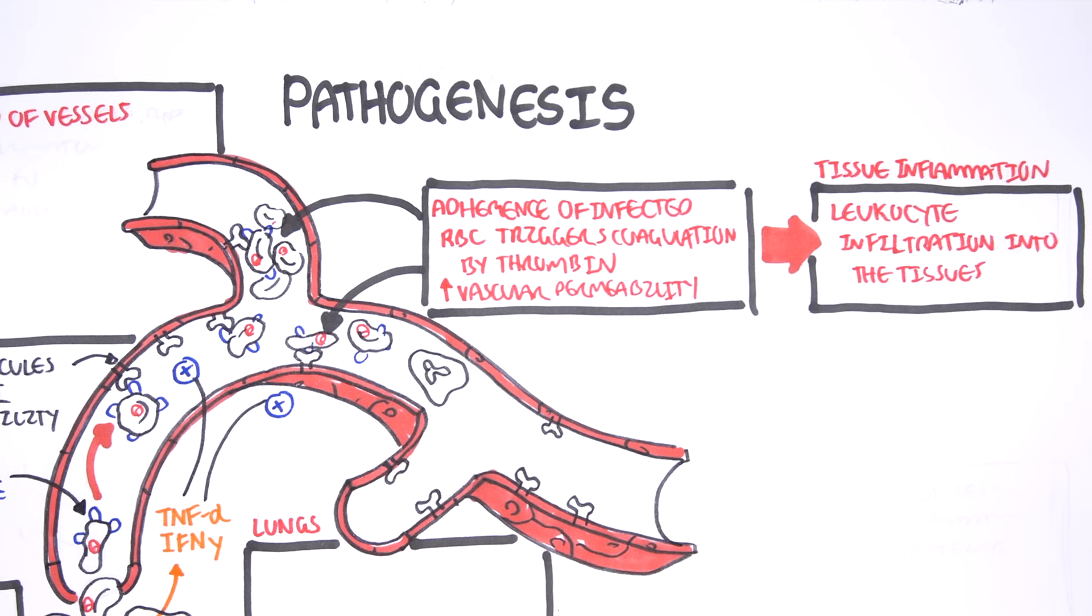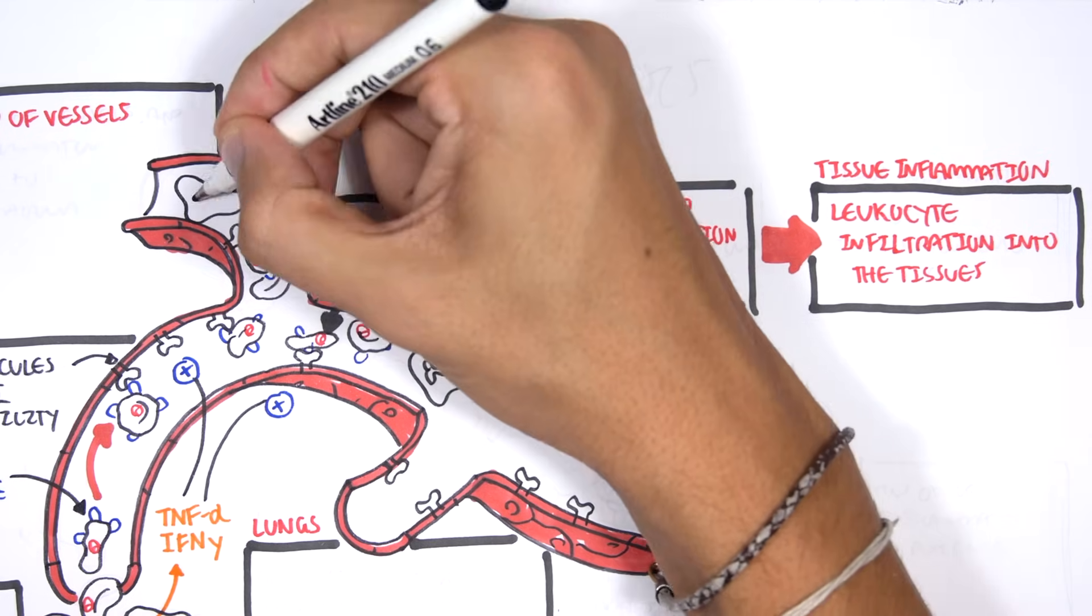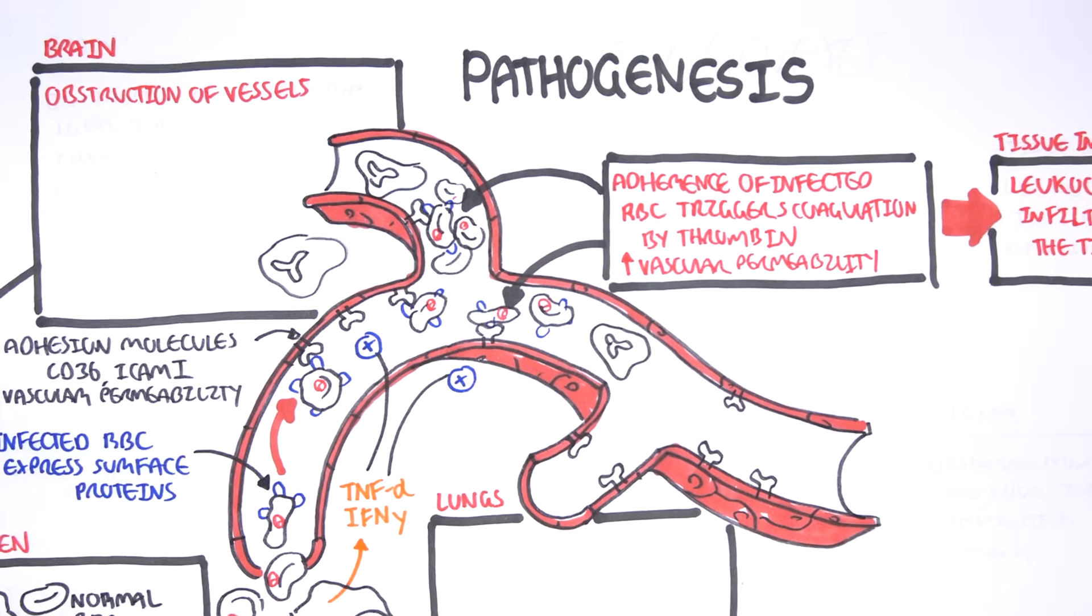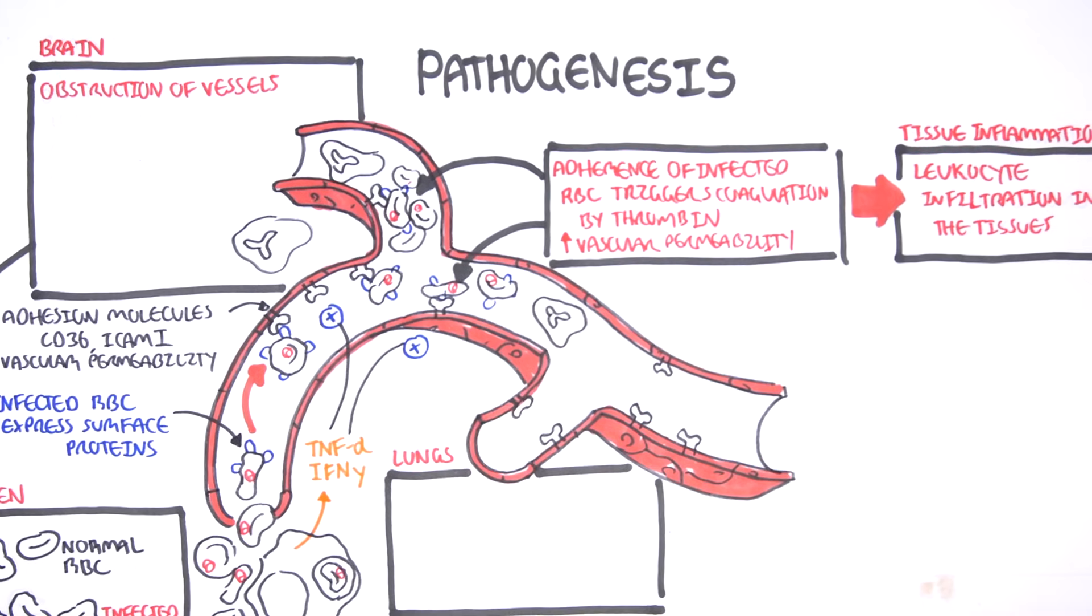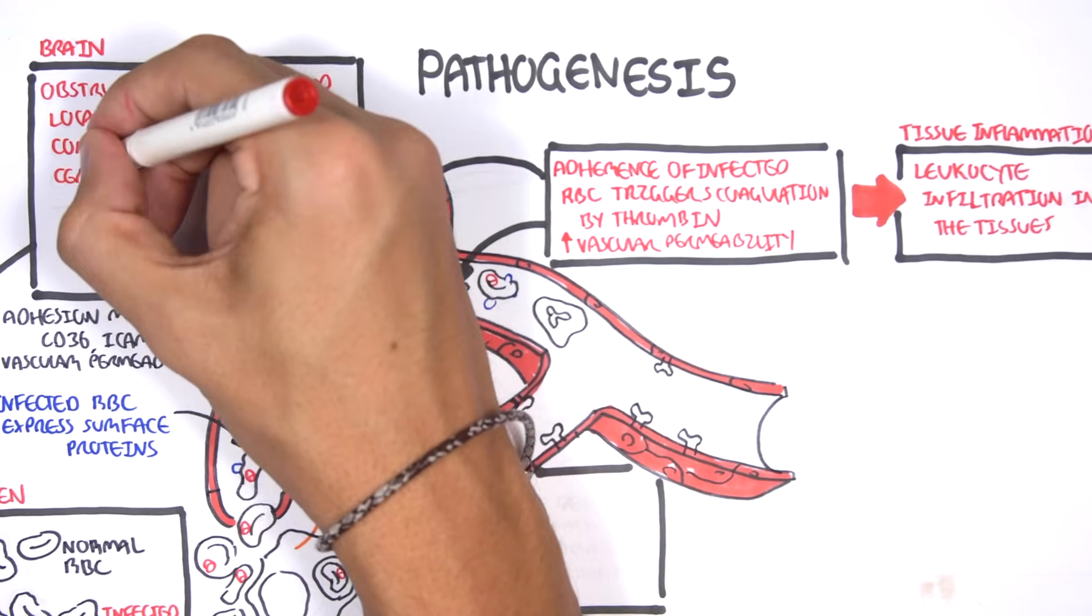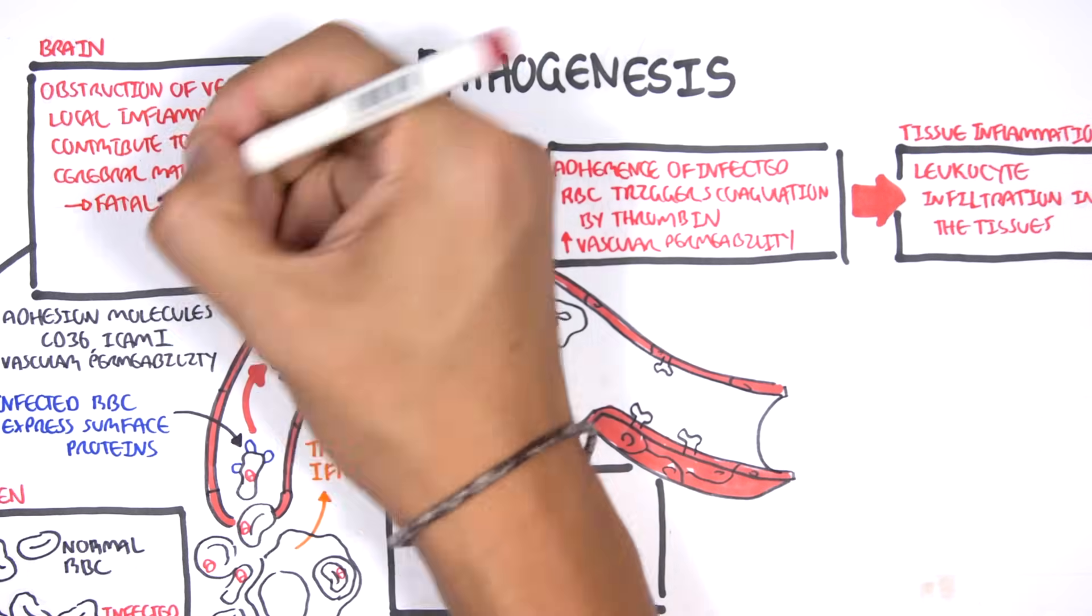So to summarize, in the brain, if we have obstruction of the vessels and local inflammation here, this can lead to what's called cerebral malaria, which is fatal.